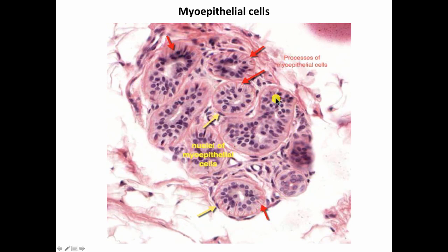Let's not forget the myoepithelial cells that you were asked to identify in assignment one. They lie inside the basal lamina of the secretory acinus. These are the secretory cells, and these are the myoepithelial cells — those arms, those tentacles wrapping around the gland. In some cases they've been cut crosswise and appear as eosinophilic striations. These myoepithelial cells help to squeeze the secretion out of the gland into the duct, and myoepithelial cells are also found surrounding the ducts themselves.